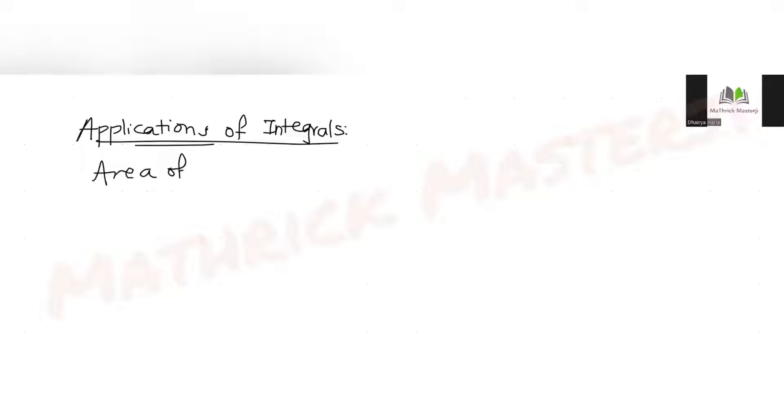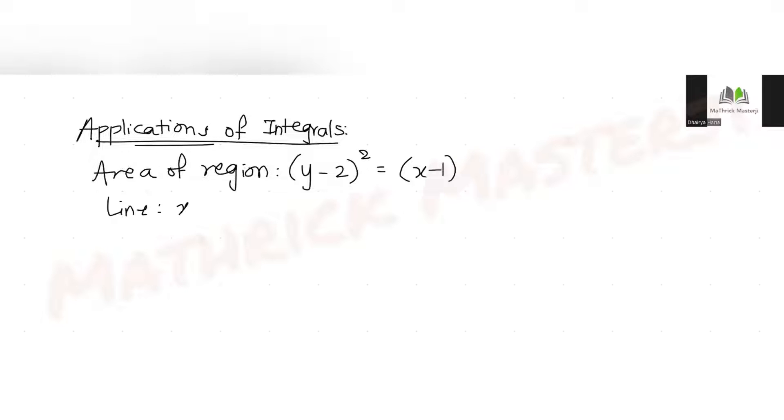Today's question is from the topic of applications of integrals, specifically the concept of area under the curve. The question asks us to find the area of the region enclosed by the parabola given as (y - 2)² = x - 1, the line x - 2y + 4 = 0, and the positive coordinate axes.